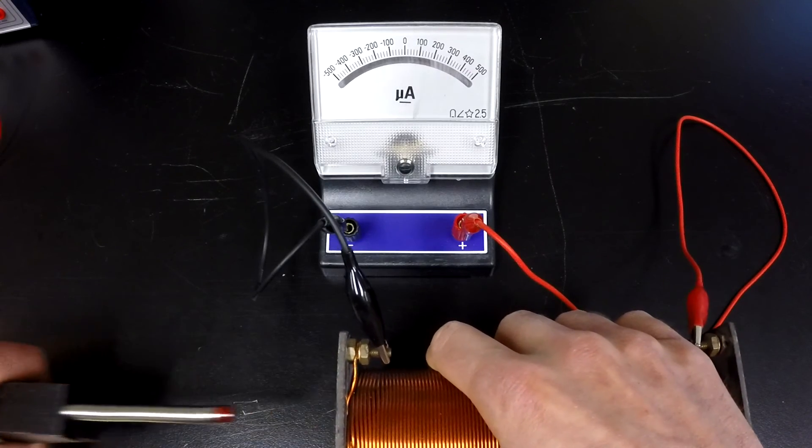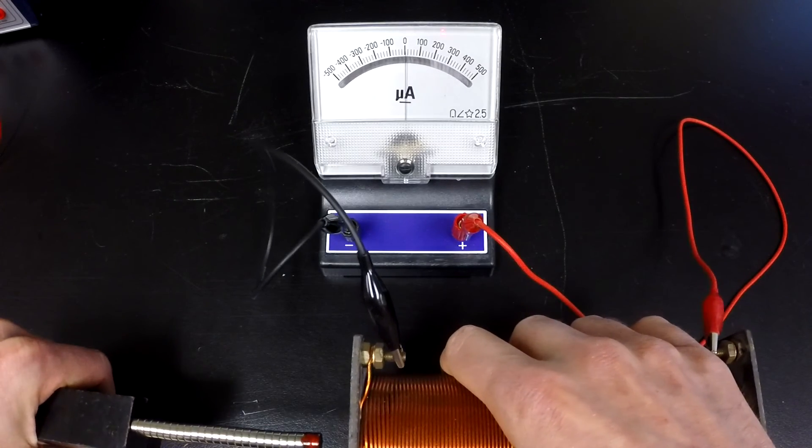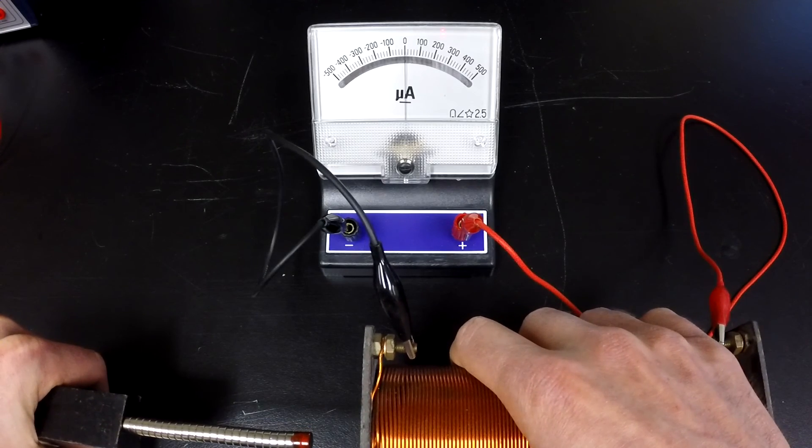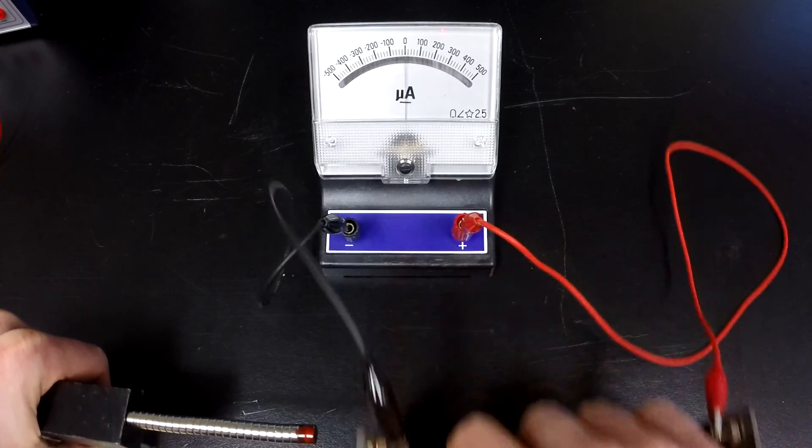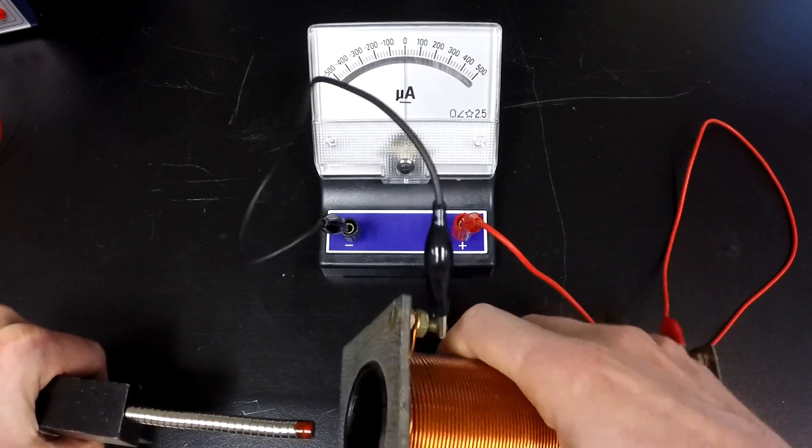We can keep the coil stationary and decrease and increase the strength in the magnetic field. We can keep the magnetic field lines and the source of that stationary, and we can move the coil in and out in a linear fashion. Or we can rotate the coil.